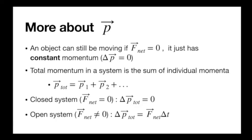An object can still be moving even if f net is zero. F net determines the change in motion — but an object can have some momentum and we don't need any force to keep it the same. I could just be floating in space with some velocity, and there's no force needed because my momentum is constant. Force causes a change in momentum. So you can have f net equals zero on something that's still moving, as long as that motion is constant. If it speeds up, slows down, or turns, you need a force. Stationary systems are easiest: if momentum is zero, then f net has to be zero. But momentum doesn't have to be zero for f net to be zero.